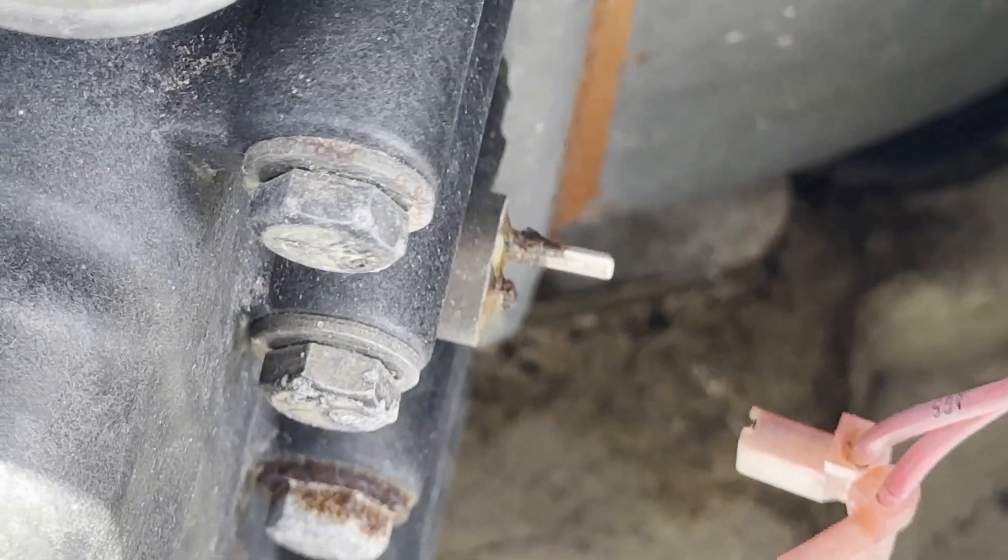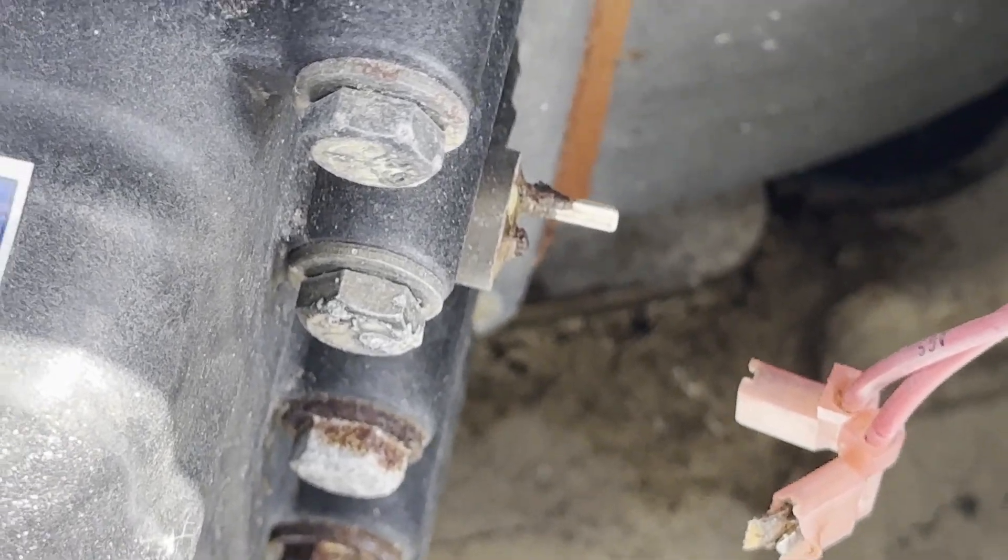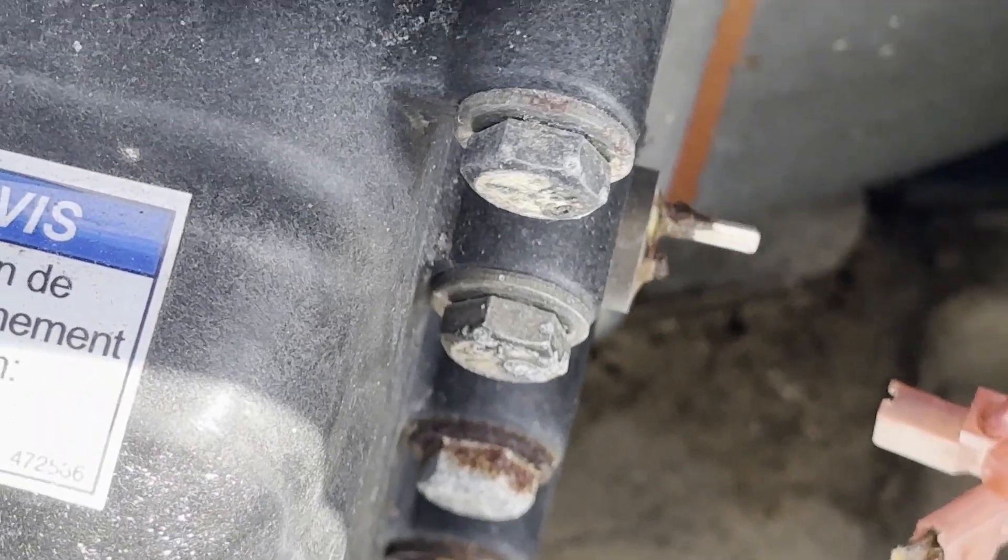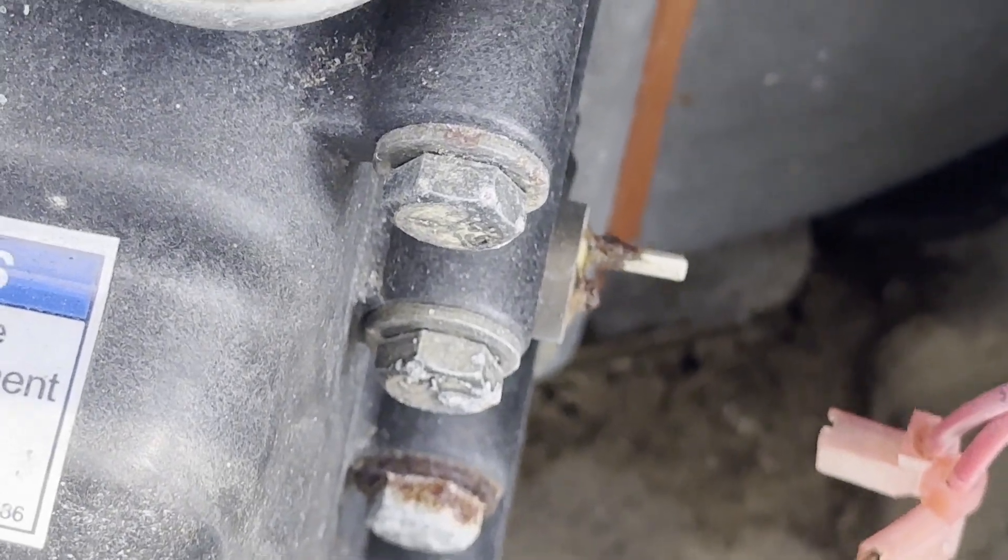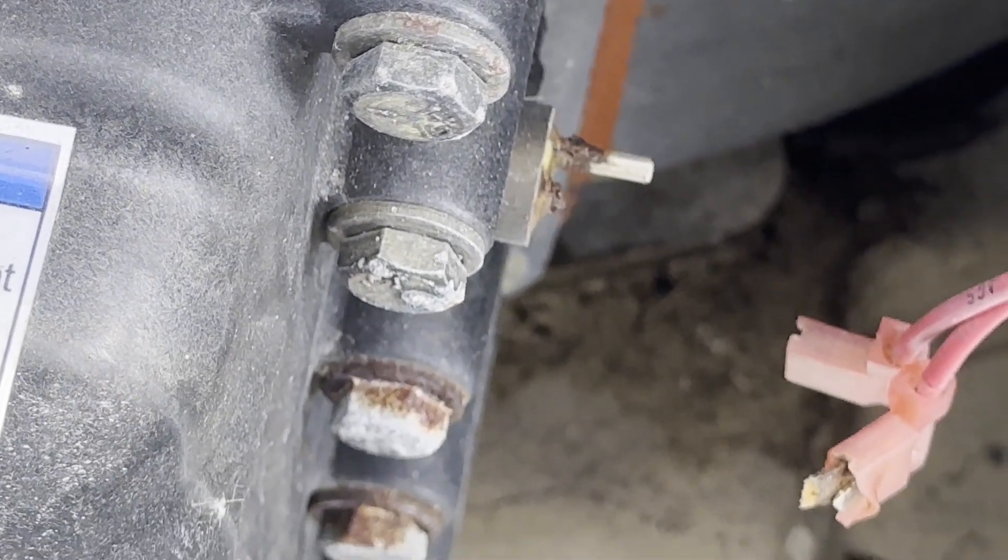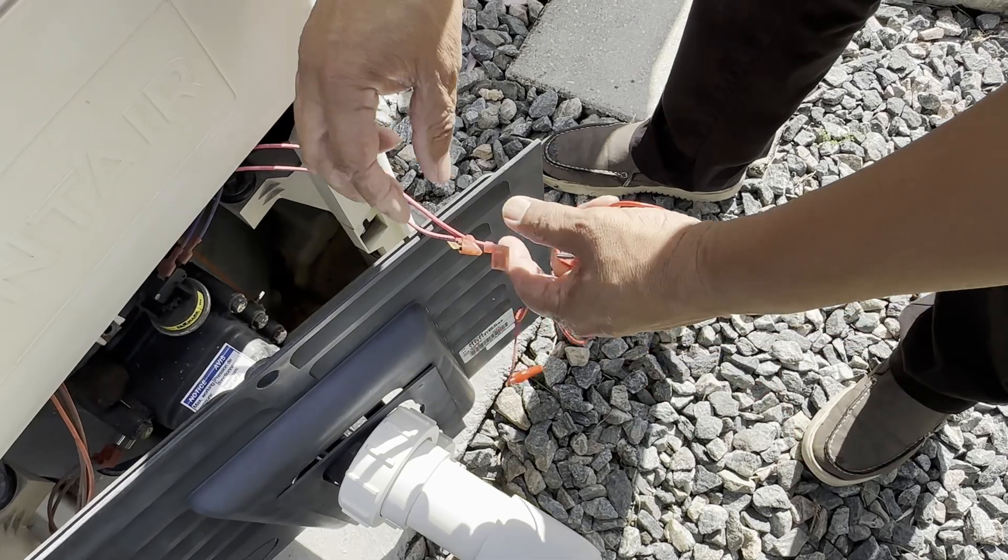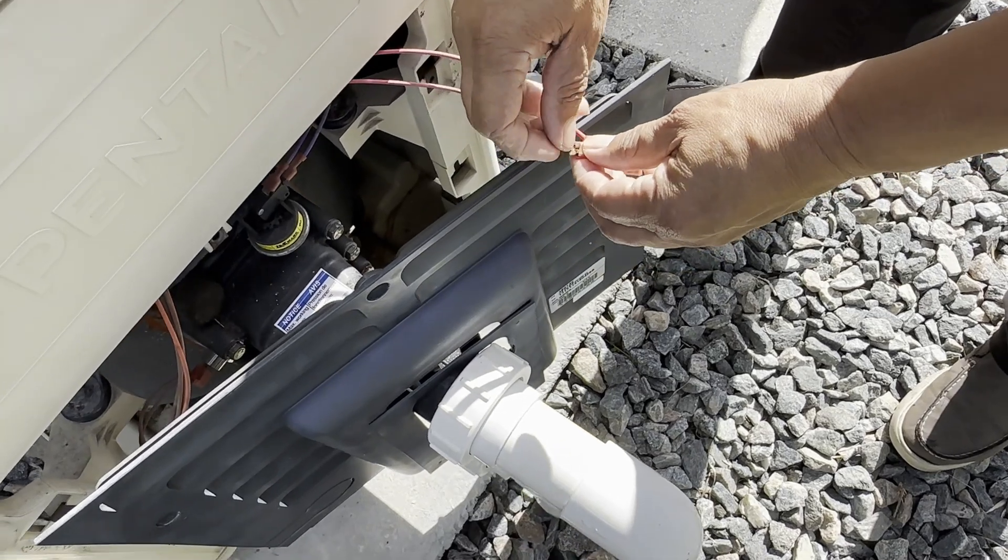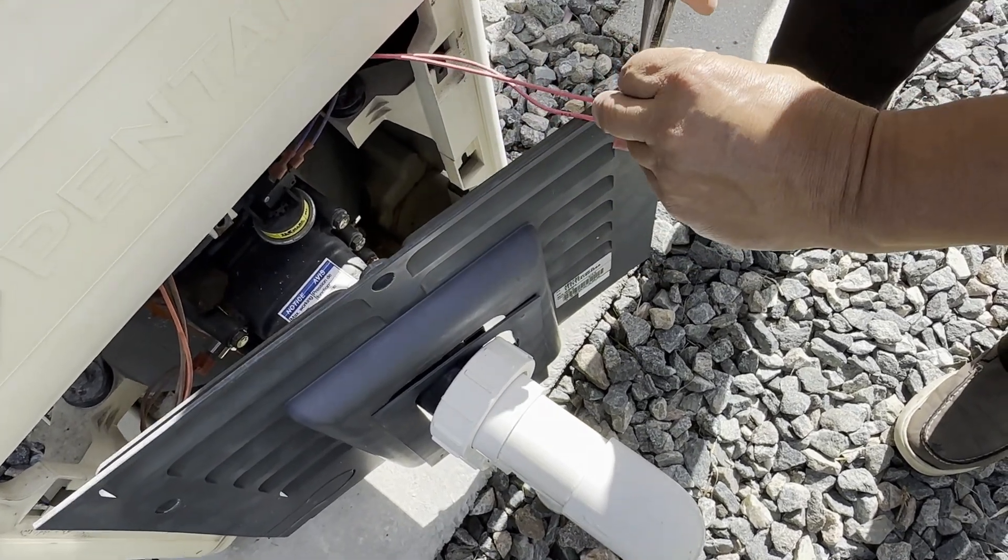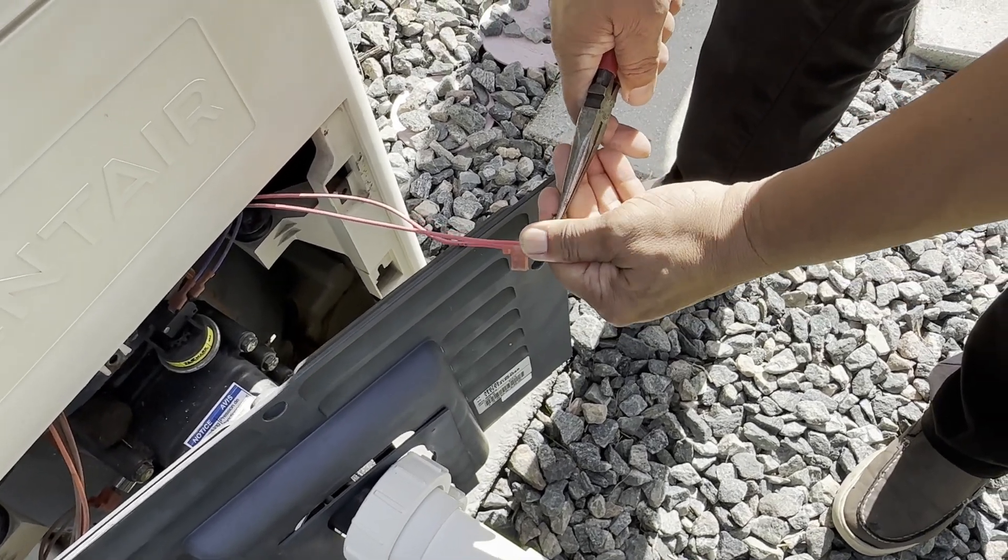So we're definitely going to have to change the autogas shutoff. Now, to see if that is the problem, what we can do is we can jump this. And we'll jump it. We'll try the heater again. And if it powers up and starts heating, then we know that that is the problem. So let's do that. We're going to get a jumper. We have a jumper here, just two alligator clips. And we're going to remove the piece. It's almost out. It's really corroded.